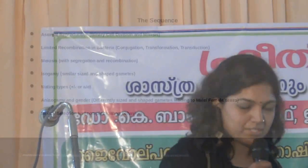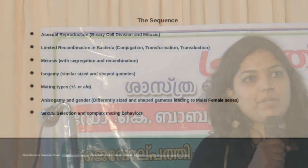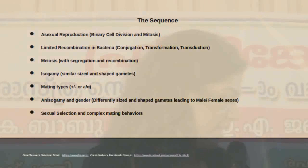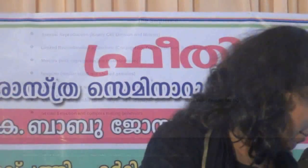Asexual reproduction, bacterial recombination, and meiosis are all covered here. Isogamy and mating types are also discussed. Mating types include anisogamy and gametes. These are the key concepts covered in this section.